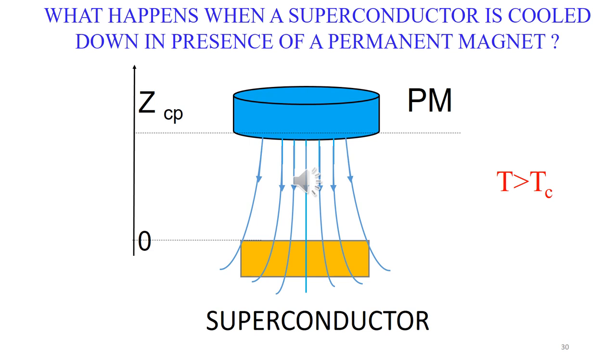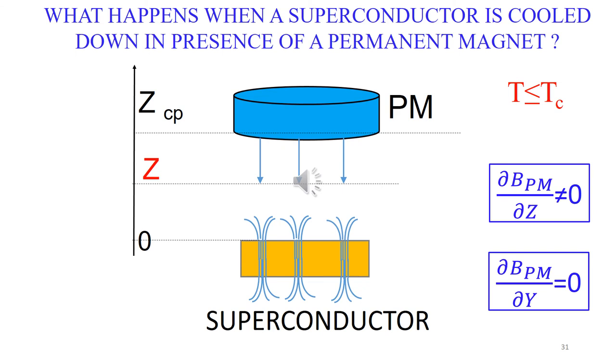When a superconductor is cooled down in the field of a magnet above the critical temperature, the field goes through the superconductor. Below the critical temperature, the magnetic flux is canalized along flux tubes called vortices.